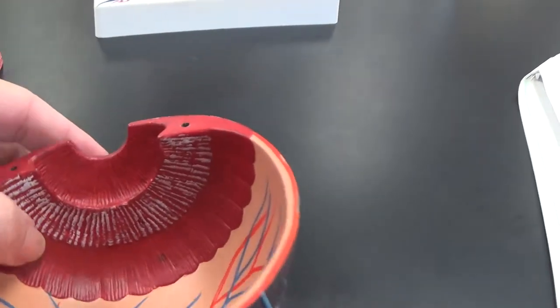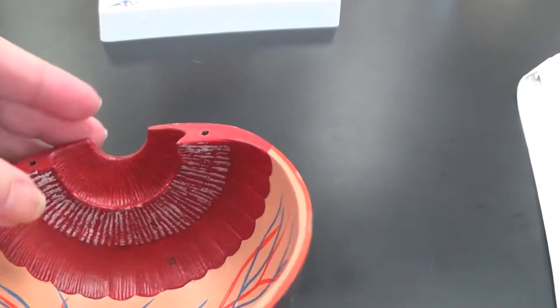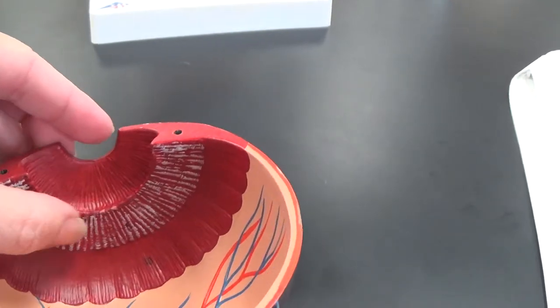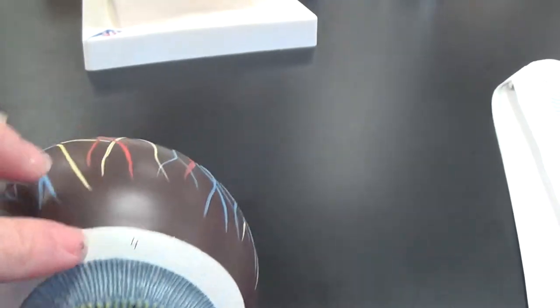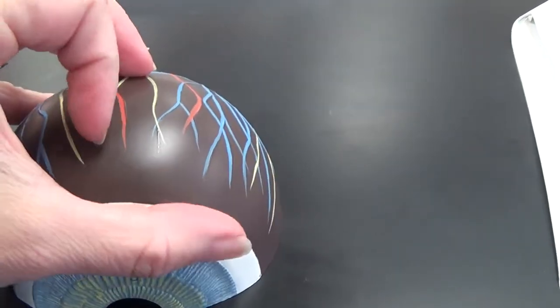On the inside here, the scalloped area is the ora serrata. And this area with the white lines is the ciliary muscle or ciliary body. We can also see that on this side is this white line going around.